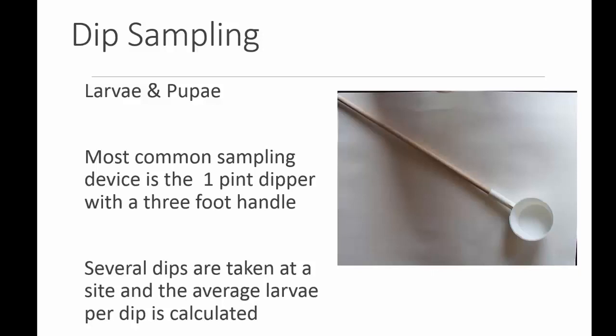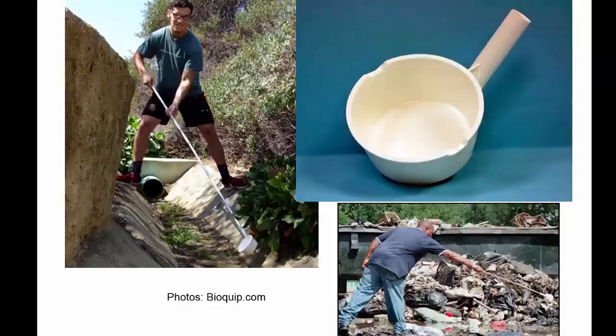Generally, larvae develop faster at higher temperatures, so that's why this information is useful. Dip sampling can indicate if larvae are present or absent in a particular or suspect habitat. If larvae are collected, they can be preserved and identified later to determine the species that were present at each sampling location.